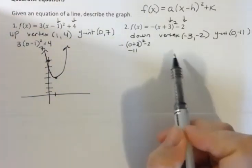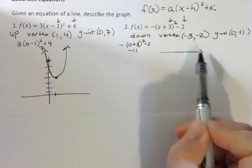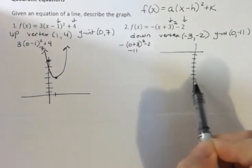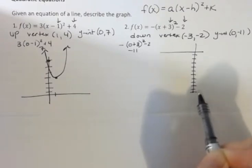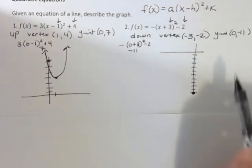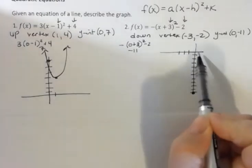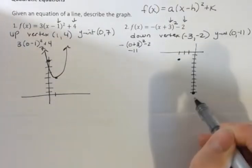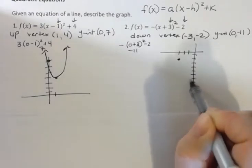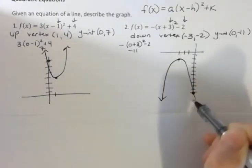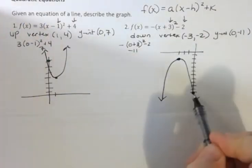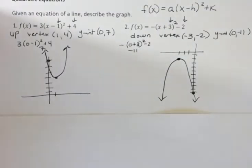So if I want to draw this one, I would mark negative 11 on the y-axis. This is where I'm crossing the y-axis. My vertex at negative 3, negative 2 is here. And I know it's opening down. So then I would want to draw something that looks like this, a downward facing graph with a vertex where I know it to be and a y-intercept where I know it to be is a nice rough sketch.